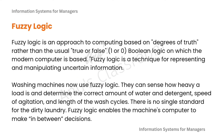Fuzzy logic is another important approach used in computing, based on degrees of truth rather than the usual true or false — it is not a simple one or zero system but has varying degrees of truth, like 10 percent truth or 20 percent truth. It is a modern computer-based technology for representing and manipulating uncertain information. For example, washing machines nowadays use fuzzy logic and AI: they can sense how heavy a load is and determine the correct amount of water, detergent, spin speed, length of wash cycle, and so on, since there is no single standard for dirty laundry. Fuzzy logic enables the machine to make in-between decisions — not strictly half water or full water, or exactly one or two scoops of detergent, but perhaps one and a half scoops.